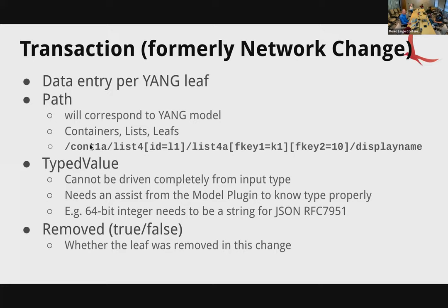For instance, we have container one-A, list four — and list four has a key, so this is L1 in that list. List four-A is another list within a list, and this is a double-key list where one key is a string and the other is an integer. The leaf at the end is display-name. That's the path you're storing within that internal change.